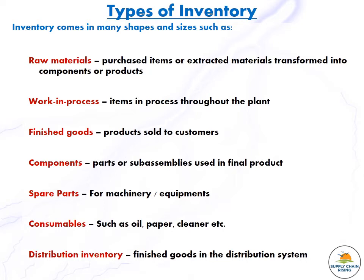The second type is work in process, which is semi-finished inventory — raw material that has been converted but not yet completed. The third type is finished goods, which are the final products sold to customers.